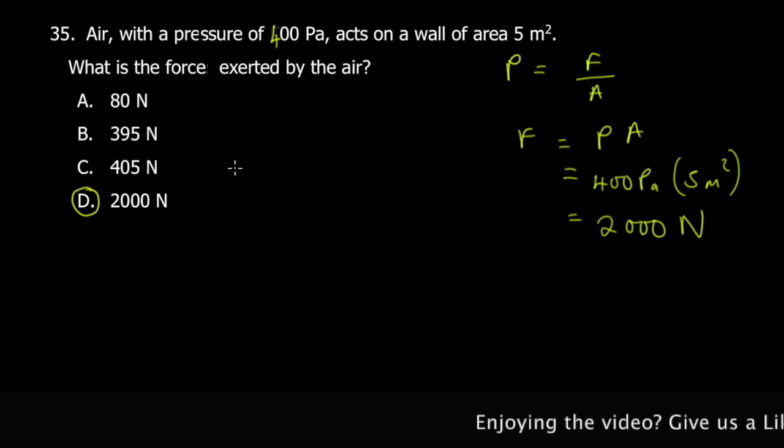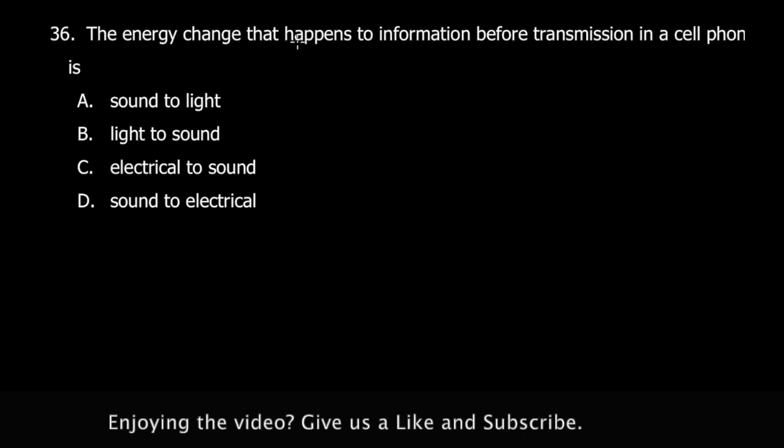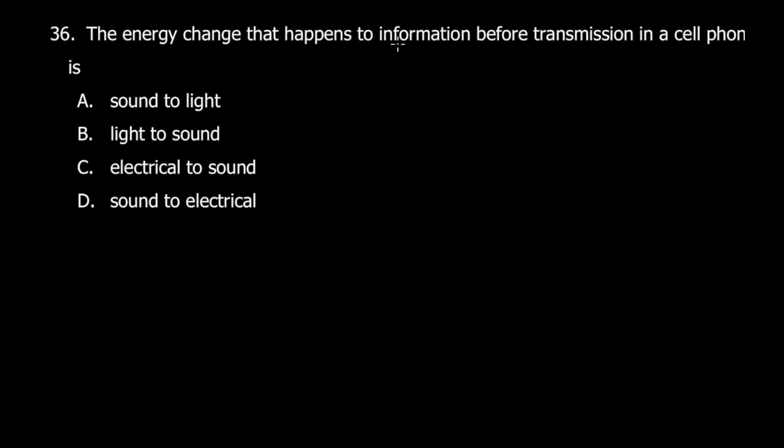Let's quickly move to question 36. The energy change that happens to information before transmission in a cell phone is... You're talking into a cell phone, so that's sound energy. This sound energy is being converted to electrical energy. It goes from sound to electrical.